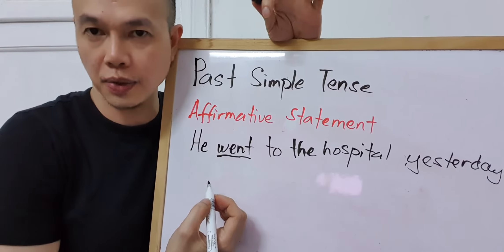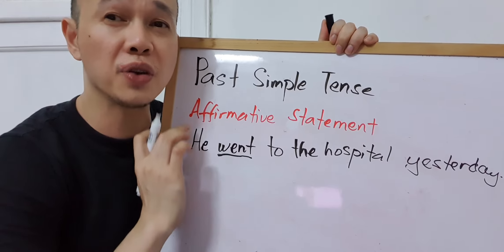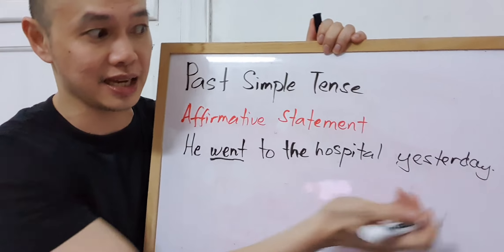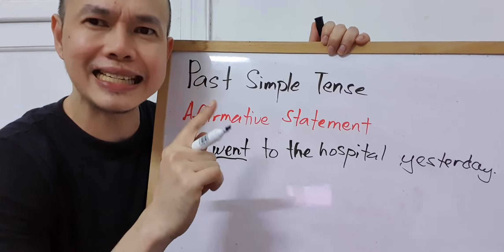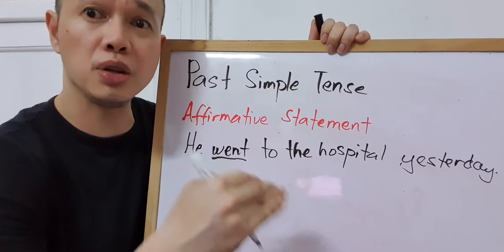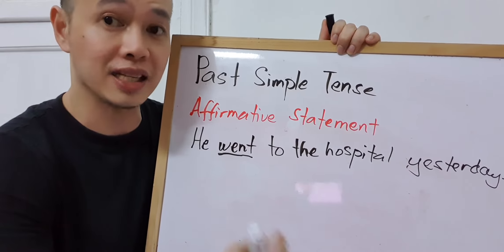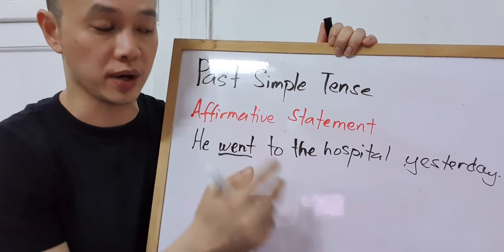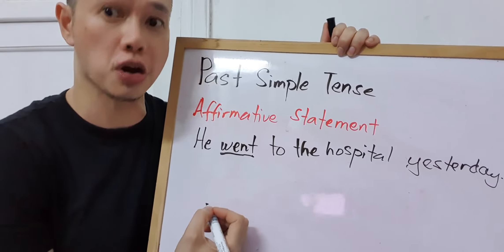The common mistake that learners of English as a second language make is that when referring to an action that already happened at a specific time in the past — in this example, 'yesterday' is our time reference — we tend to still use the base form or present form of the verb. You need to use the past form because you are referring to an action that already happened at a specific time in the past.